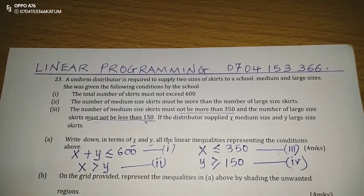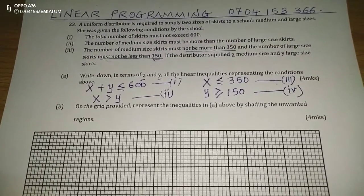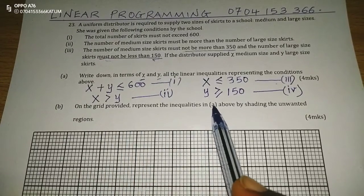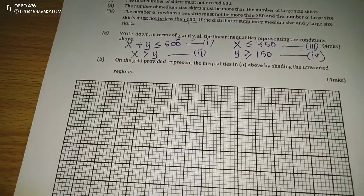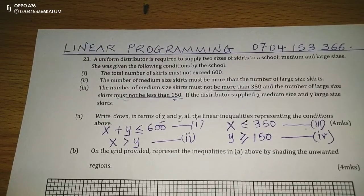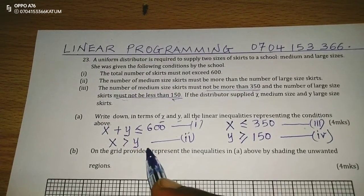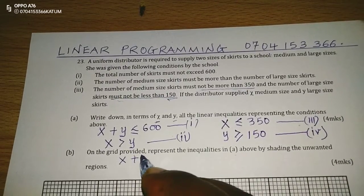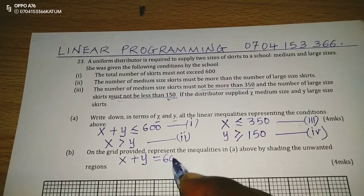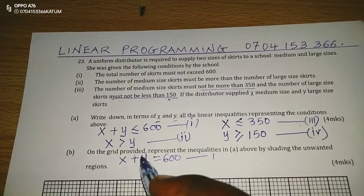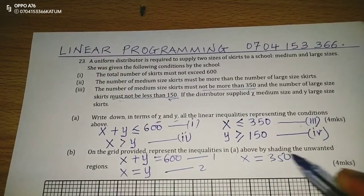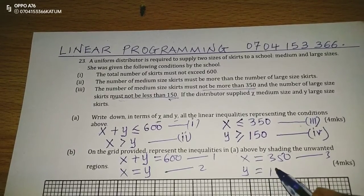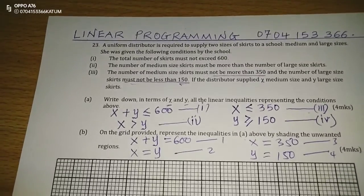Therefore, we have four inequalities representing the conditions provided. Then we go to the next question, part B. We're going to plot the inequalities. For you to plot an inequality, we first ignore the signs of inequalities and come up with the borderlines. The first inequality will be represented by X plus Y equals 600. That is for the first inequality. For the second one, X equals Y. For the third one, X equals 350. And for the fourth one, Y equals 150. These are the borderlines that we are going to work with.